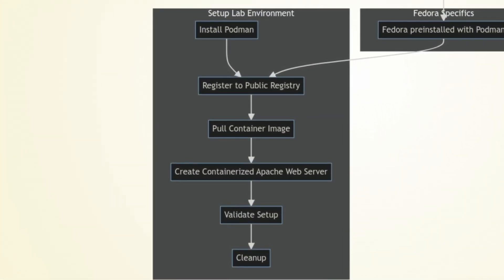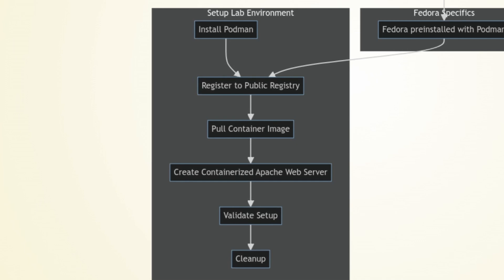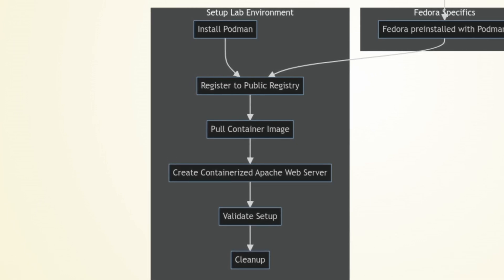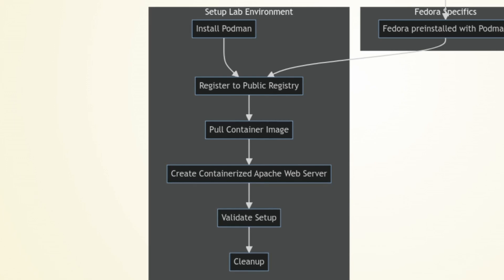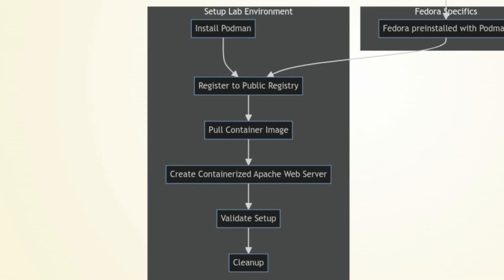With a solid understanding of these commands, let's move on to our practical demo, where we'll put this knowledge into action. In the demo, we will set up the lab environment by first installing Podman, registering to a public registry to access container images, pulling a container image from that registry locally, creating a containerized Apache web server to make sure everything is running as it should, validating our work, and then cleaning up.